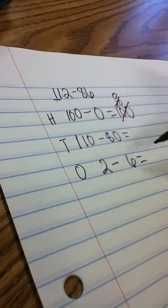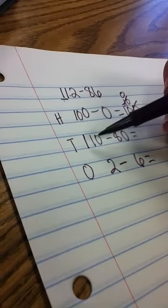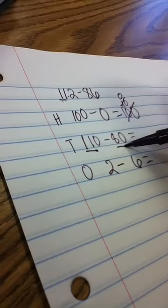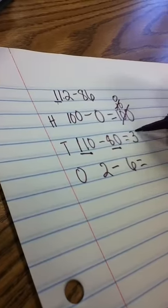So now I have 110 minus 80. I teach them to think of that as 11 tens minus 8 tens. 11 minus 8 is 3 tens.